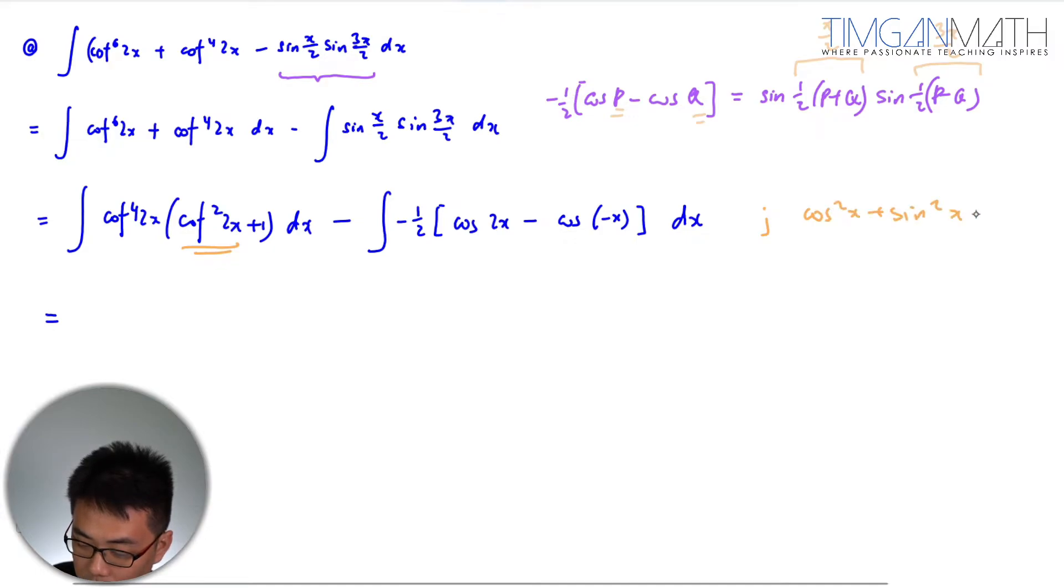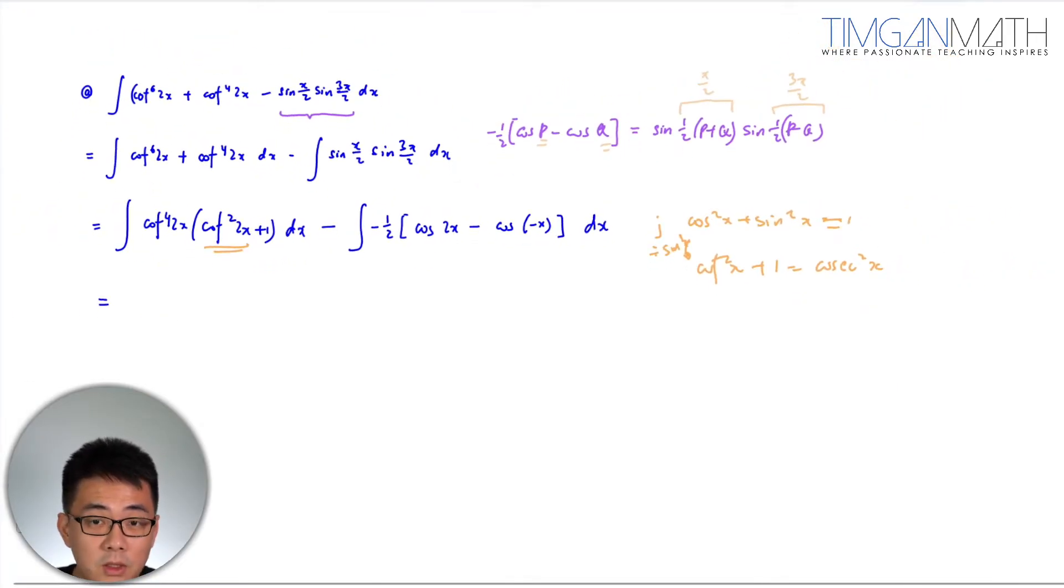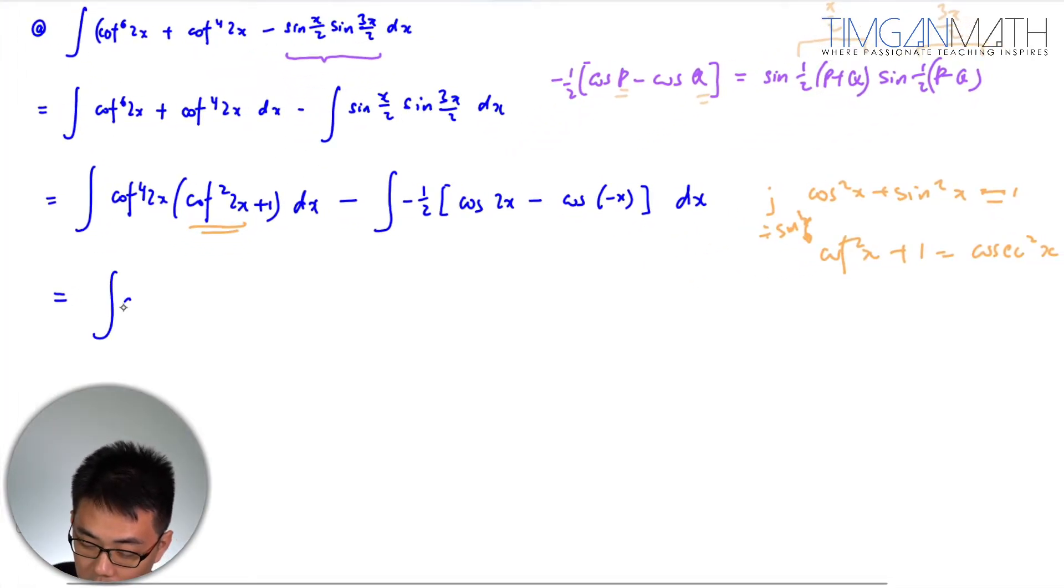But what you need to know is cot cosine square plus sine square x equals to 1 divided by sine square x. This will be cot square x plus 1 equals to cosecant x. So always know, always have a scribble on MF26 because certain formulas are in MF26 some certain formulas are not.